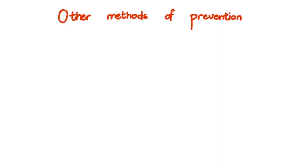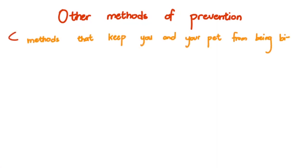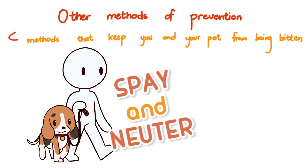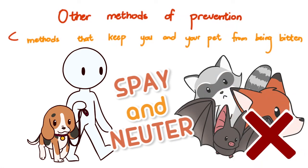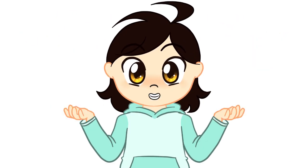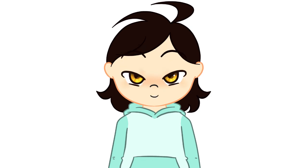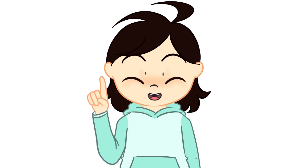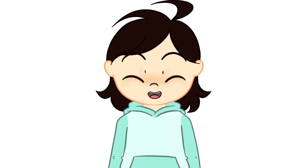Other methods of prevention include anything that keeps you or your pets from being bitten — like training them to behave on a leash, neutering or spaying your pets to help keep unwanted animals from approaching them, and avoiding contact with wildlife, especially those that seem ill. Bats in particular: if a should-be nocturnal bat is flying around during the day or paralyzed on the ground, do not engage. You often don't feel bat bites, so you may not even know you've been bitten. September 28th is World Rabies Day — a day to raise awareness on this deadly but completely preventable disease.